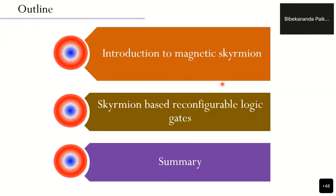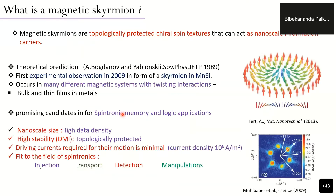The outline of the presentation covers three parts: first, an introduction to the magnetic system; second, a discussion of skyrmion-based reconfigurable logic gates; and third, a summary of the presentation.